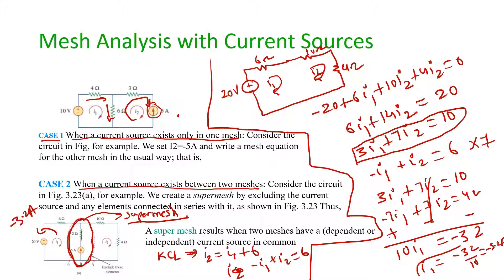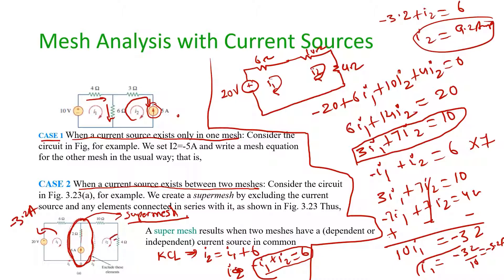We can then find I2 from the KCL equation: minus (minus 3.2) plus I2 equals 6, so I2 equals 2.8 amps — that is 9.2 minus 3.2... I2 equals 2.8 amps. This is how we find mesh currents: for Case 1, if the current source is in one mesh, simply set that mesh current equal to the source value. For Case 2, when the current source is between two meshes, create a supermesh and apply both KVL and KCL.